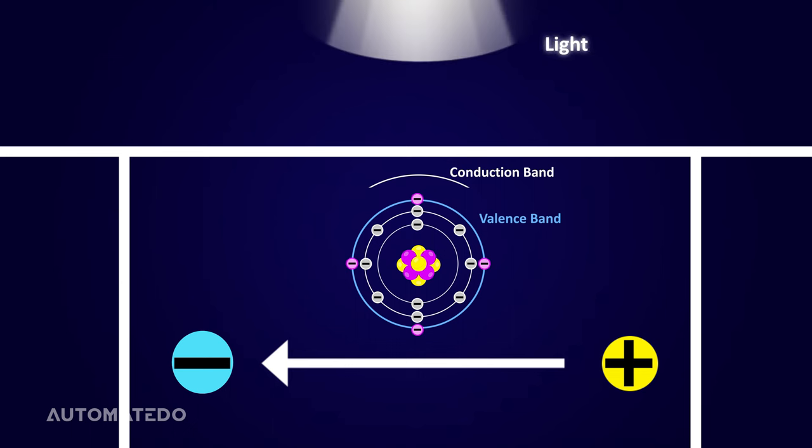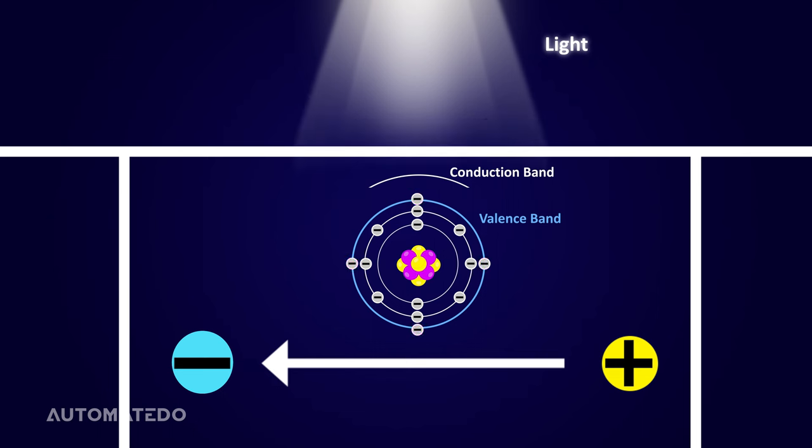It's time to shine light over the depletion region of the photodiode to see what happens. If incident photons have enough energy higher than the band gap, they can release electrons from the valence band and occupy them in the higher energy band called the conduction band. Thus, only electrons in the conduction band can transport current. Therefore, we can see a free electron and a free hole have been generated within the depletion region. We call this the electron hole pair.